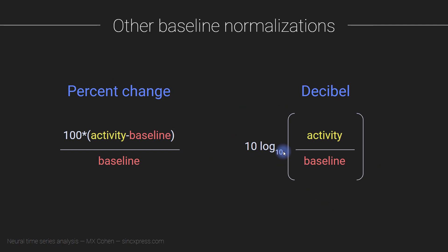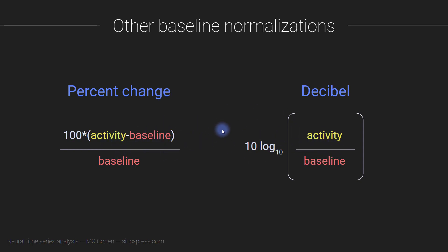Here you see two formulas showing the two main normalizations used in the field: decibel and percent change. Decibel is used more often, so in general I recommend sticking with decibels, but there's nothing wrong with looking at percent change as well. The important feature is the same in both formulas: having some measure of activity and dividing by a baseline — a frequency-specific baseline division. Both are fairly comparable and will both address all four points discussed.